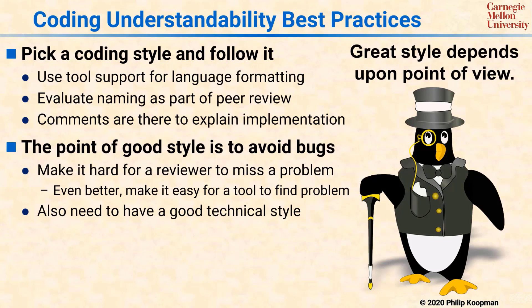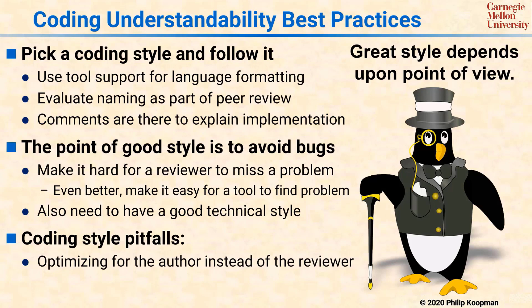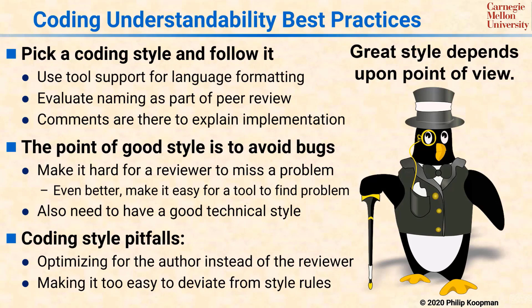There are two general coding style pitfalls to watch out for. First, you should not optimize your coding style guidelines for the author — instead, they should be optimized to make the code easy to review. It's okay to create a little pain for the author if, by doing so, you can improve readability and your reviewers can find bugs more easily. A related pitfall is that you should not make it too easy to deviate from style rules. Programmers, being human, can be expected to take the path of least resistance when they perceive things are getting painful, and that might mean not conforming to style rules that are there to ensure good code hygiene and, in the end, save everyone a lot of pain by finding bugs before they escape to the field.